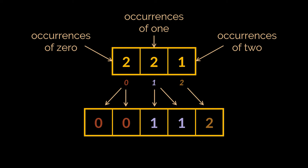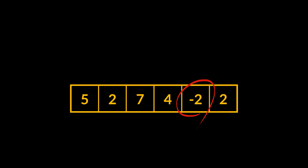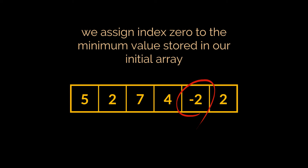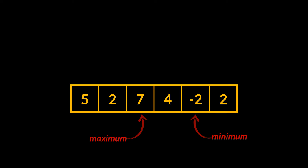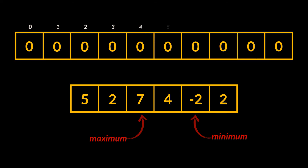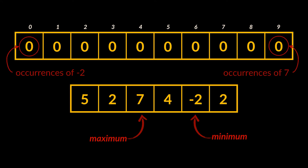Let's take another array where things might get a little bit trickier. In this array we have negative values, and negative values cannot be used as indices. How are we going to solve this? Well, this problem can be solved by assigning the zero index to the smallest value — the minimum value — stored inside our initial array. In this array the minimum value is minus two and the maximum value is seven, so we are going to create an array that can hold 10 slots, where index zero stores the occurrences of minus two.